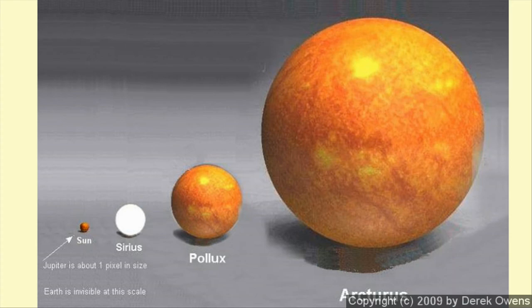Pollux there is what we call an orange giant. It's a much larger star. And then you see that huge star, Arcturus. That's a red giant. A very, very large star. And they actually get even bigger than that.